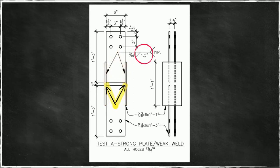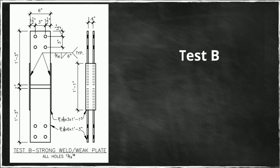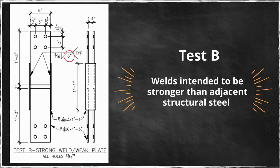For our test B, everything will be similar but the weld length will be greater, so that weld will have a greater strength. And we'll also use a weaker plate. So we expect in this case the steel plate to fail first and the welds to hold.